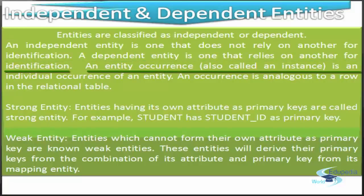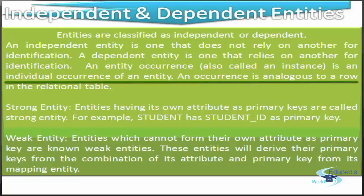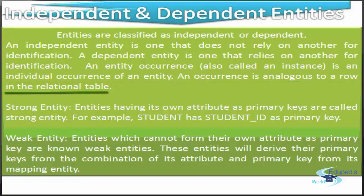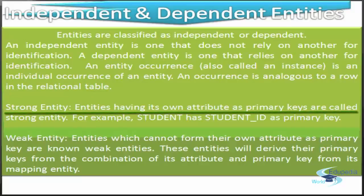An entity occurrence, also known as an instance, is an individual occurrence of an entity. An occurrence is analogous to a row in the relational data. Strong entities are entities having their own attribute as a primary key. For example, a student has a student ID as a primary key, and hence it is a strong entity.